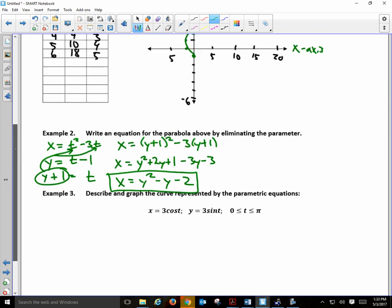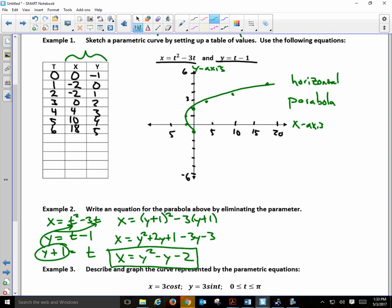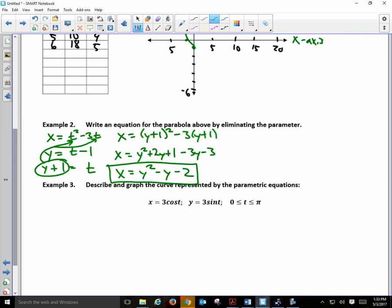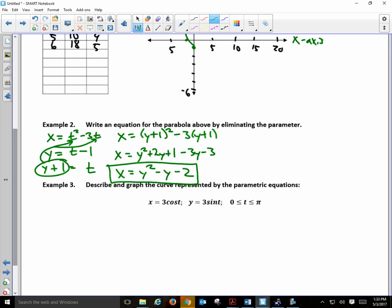So the first part of your assignment is going to be asked to do the following. Generate a table of values. Sketch a graph based off those table of values. And then eliminate the parameter. Do you think you could do that? This is a very brief introduction of parametric equations. We're just going to do two more examples. And the first one is going to go very quickly.